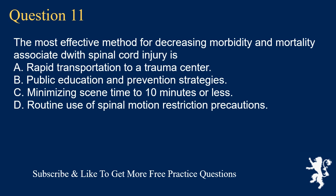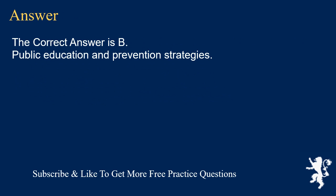Question 11. The most effective method for decreasing morbidity and mortality associated with spinal cord injury is: A. Rapid transportation to a trauma center. B. Public education and prevention strategies. C. Minimizing scene time to 10 minutes or less. D. Routine use of spinal motion restriction precautions. The correct answer is B. Public education and prevention strategies.